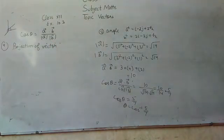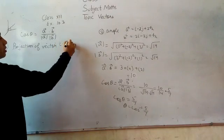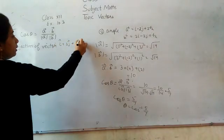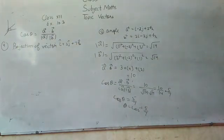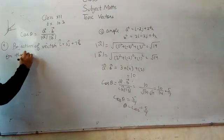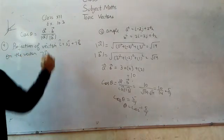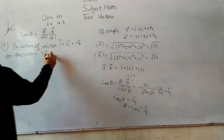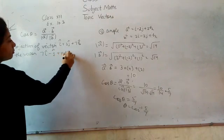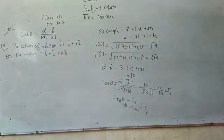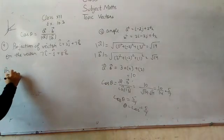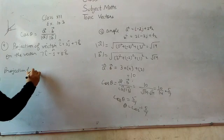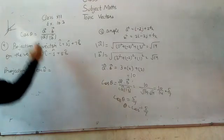Find the projection of vector i plus 3j plus 7k. What is the question? i plus 3j plus 7k. What should we find? We have the projection of vector a on vector b. The vector is 7i minus j plus 8k. This is vector b. We need to find the projection of a on b. We need the formula.